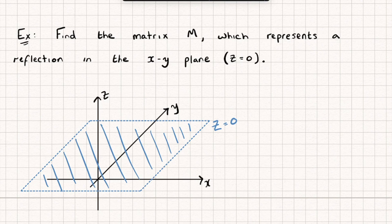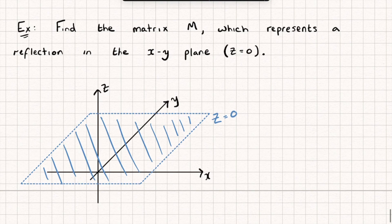To find this matrix is going to be very similar to what we were doing in two dimensions. We're going to see what happens to our I, J and K unit vectors under the transformation and these will give us the columns of our transformation matrix.